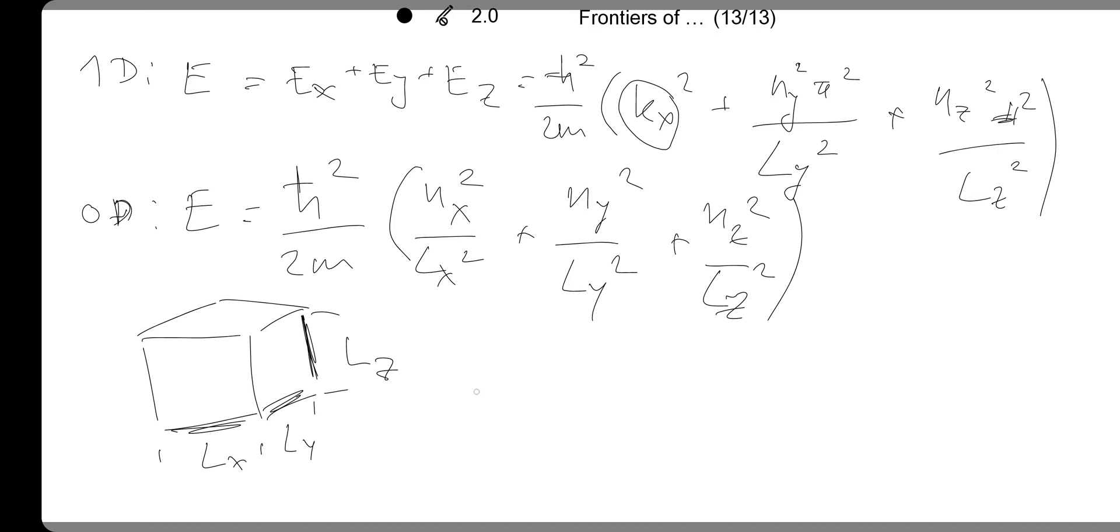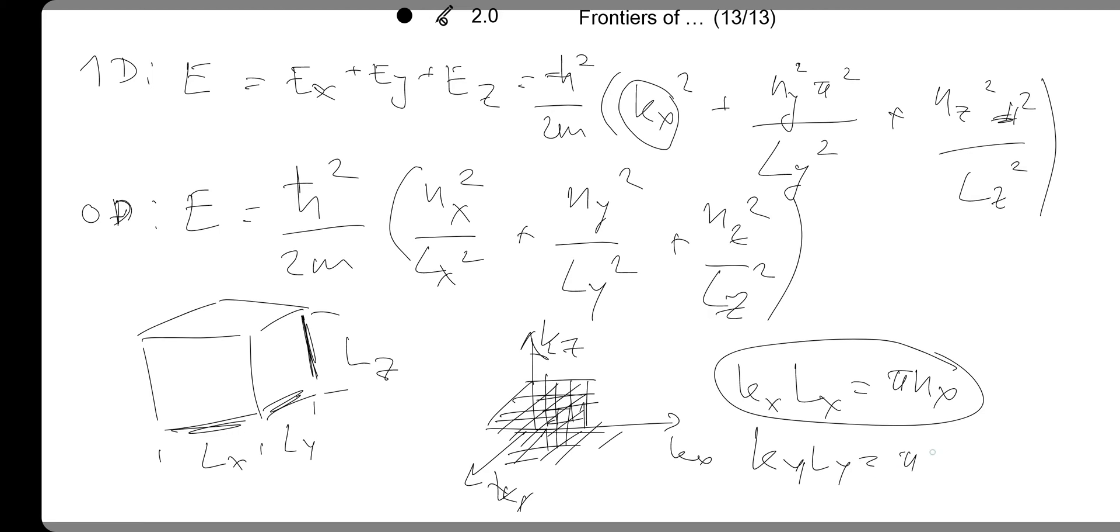Each state will occupy a small volume in the momentum space. Now we have kx, ky, kz, and there will be lots of states going all the way there. For example, in the kx, we know how it depends, right? So kx times lx will be pi times nx just from the solution. You will have the same: ky times ly equals pi times ny and so on, and the same for lz.